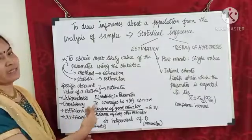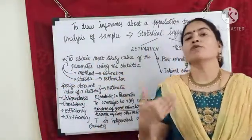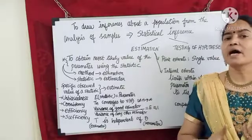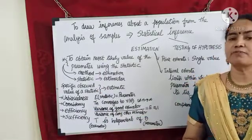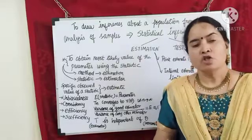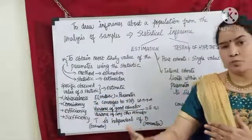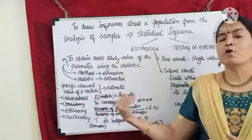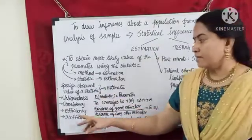Now when we say the statistic is an estimator, we need to say what are the characteristics of a good estimator. Four ideas: number one, unbiasedness; two, consistency; three, efficiency; and four, sufficiency. What do you mean by unbiasedness? An estimator is a very good estimator if the expected value of the statistic gives me the population parameter. If the expected value of the statistic equals the population parameter, then the estimator is unbiased.